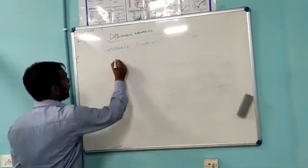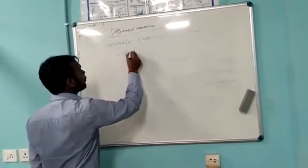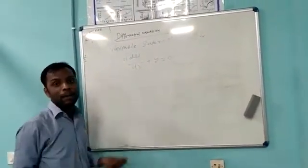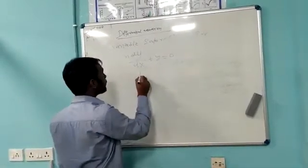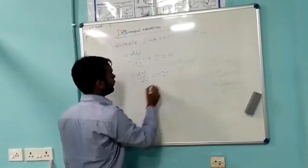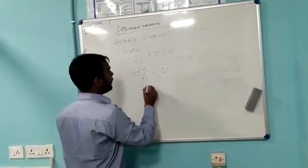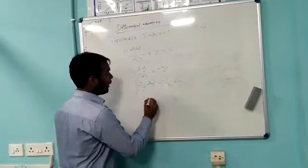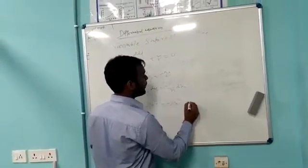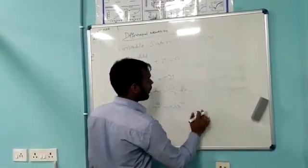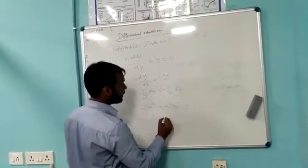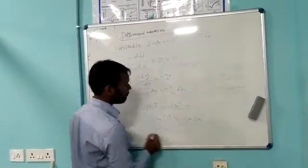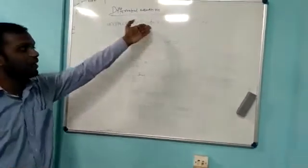For example, using the variable separable method: suppose x dy/dx plus y equal to 0. We separate it: x dy/dx equal to minus y, so 1/y dy equal to minus 1/x dx. Integrating both sides: ln y equal to minus ln x plus c. Therefore ln(xy) equal to c, or xy equal to constant. That is the solution of this differential equation.